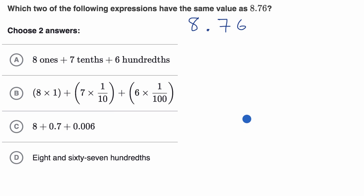So we have 8.76. There's a couple of ways that we could think about it. We can look at our place values. This right over here is the ones place. This right over here is the tenths place. And this right over here is the hundredths place.